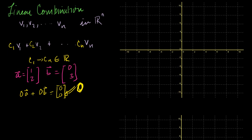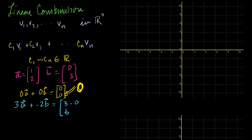We could also do 3 times a plus negative 2 times b. What is that equal to? It's 3 times 1 minus 2 times 0, so the first component is 3. And 3 times 2 is 6, minus 2 times 3 is minus 6, so the second component is 0. So it's the vector [3, 0]. This is a linear combination of a and b.